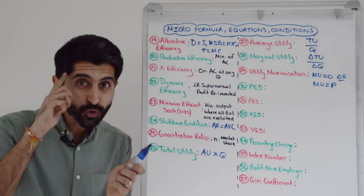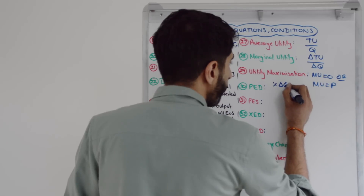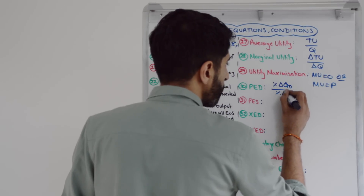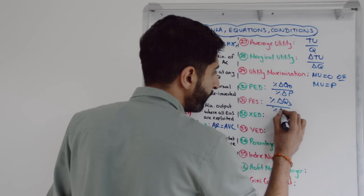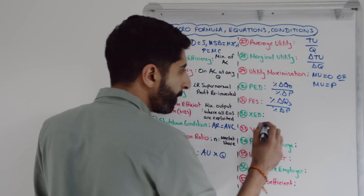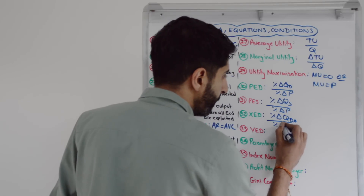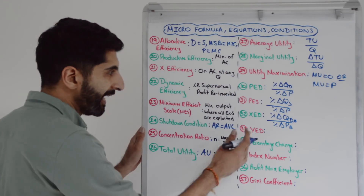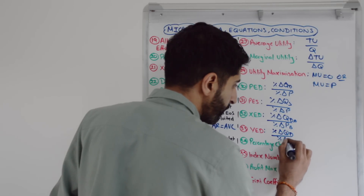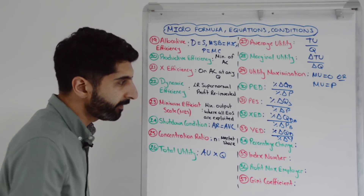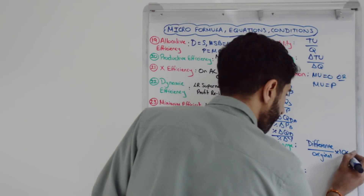Elasticity equations — just remember your Q before your P. Price elasticity of demand is the percentage change in quantity demanded over the percentage change in price. Price elasticity of supply is the percentage change in quantity supplied over the percentage change in price. Cross elasticity of demand is the percentage change in quantity demanded of one good (call it good A) over the percentage change in price of another (call it good B). Income elasticity of demand is the percentage change in quantity demanded over the percentage change in income. To work out percentage change, it's always the difference between two numbers, divide by the original number, times by 100.